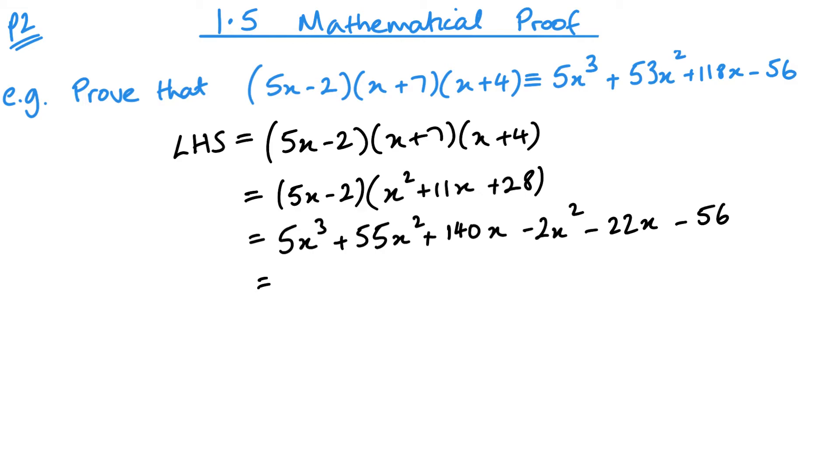And then finally, or one of the final steps then is to simplify. So we have 5x cubed, and then I've got 55x squared minus 2x squared. So that's going to be 53x squared. 140x take away 22x, that's 118x. And then finally, my minus 56. And as you can see, this equals the right-hand side. And that then is all I've done to prove this. I don't need to go any further. Because I've got my left-hand side equals my right-hand side, it does suffice for that final statement.